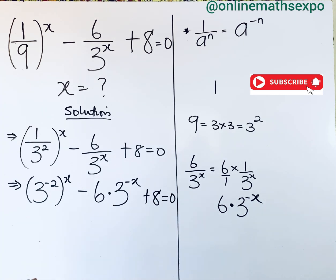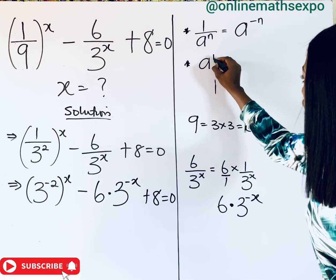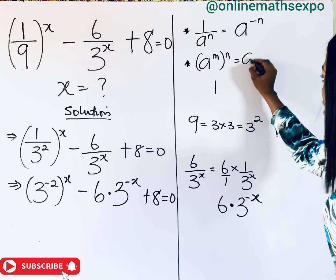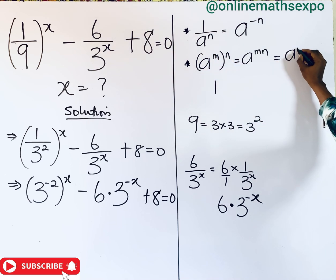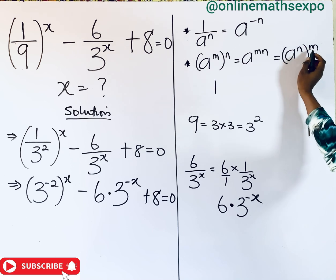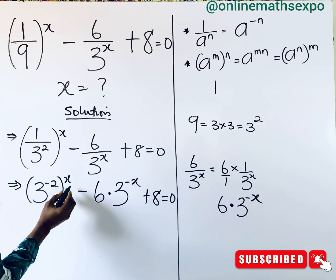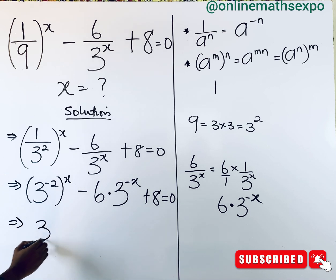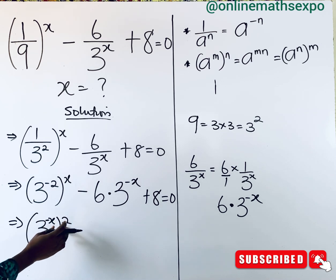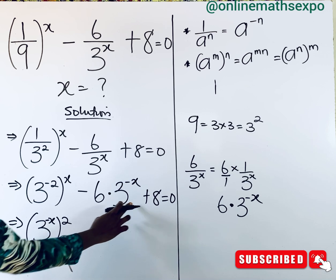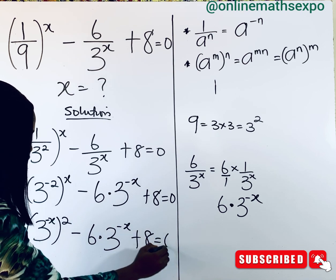You also remember one of the tips of exponents, which says that if you have a to the power of m to the power of n, it is the same as a to the power of mn — you multiply the powers. And this is also the same as a to the power of n, then to the power of m; you can switch the powers and they still give you the same thing. So let's apply this as we solve. For this, we can switch it so that we are going to have 3 to the power of x, raised to the power of negative 2, minus 6 multiplied by 3 to the power of negative x, plus 8 is equal to 0.